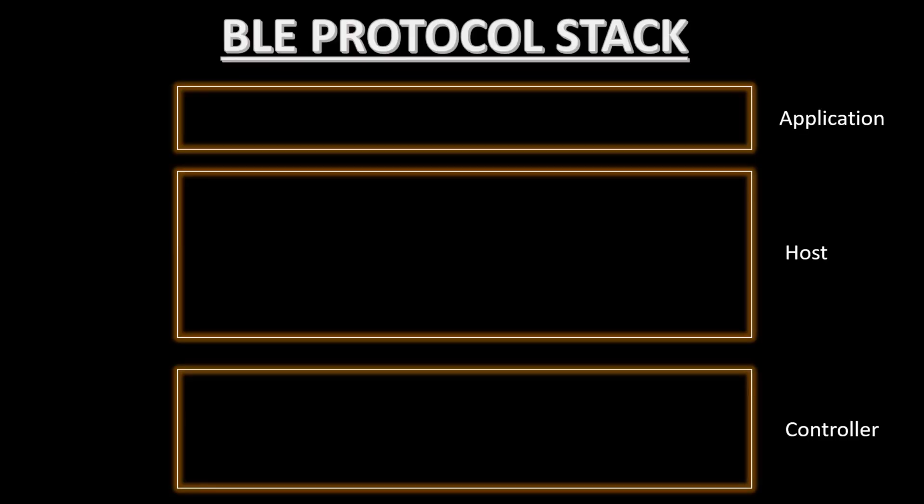The Bluetooth Low Energy protocol stack is basically divided into three sections: application, host, and controller. The controller is the lowermost layer protocol in the stack. It is a combination of hardware and software, and its main functionality is to transmit and receive the RF signal for Bluetooth using GFSK modulation through an antenna. It is also a hard real-time section.